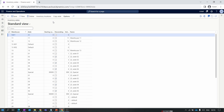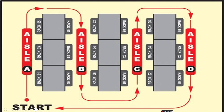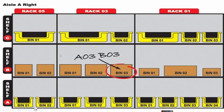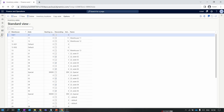Let me explain aisles, shelves, racks, and bins. In the image, one location has 4 aisles: A, B, C, and D. Inside Aisle A, we have shelves A, B, C and racks 1, 3, 5. Inside each rack there are multiple bins. For example, to find an item in Bin 3, you navigate: Aisle A → Shelf B → Rack 03 → Bin 03. The location ID is built from these components — aisle, rack, shelf, and bin number.